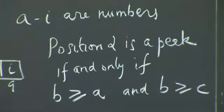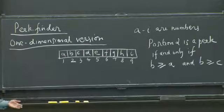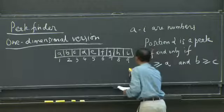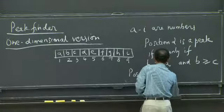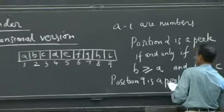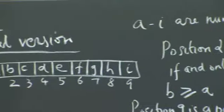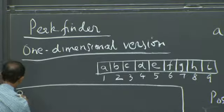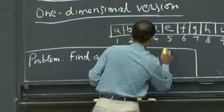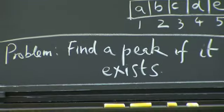In the case of edges, you only have to look to one side. So position nine is a peak if i ≥ h — you just look to your left because you're at the right end. The statement of the one-dimensional problem is: find a peak if it exists.